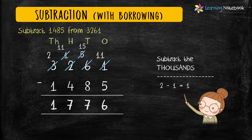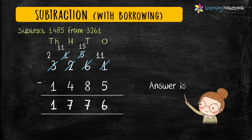So we get the answer as 1776. This is how we do subtraction of four-digit numbers with borrowing at all the places.